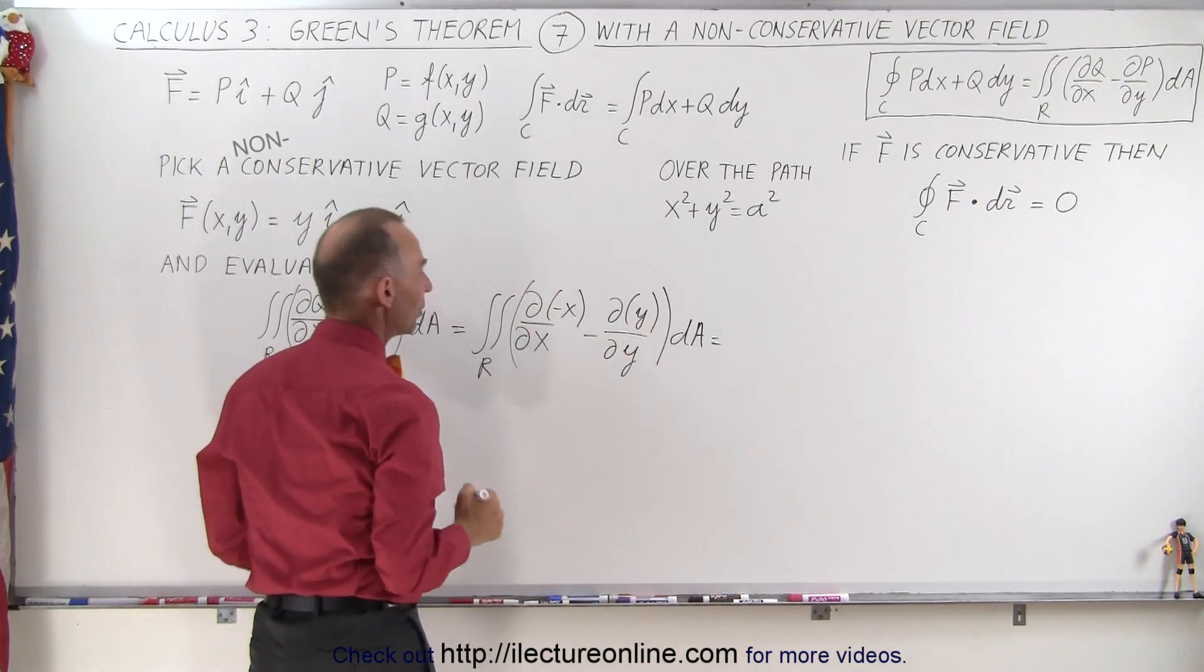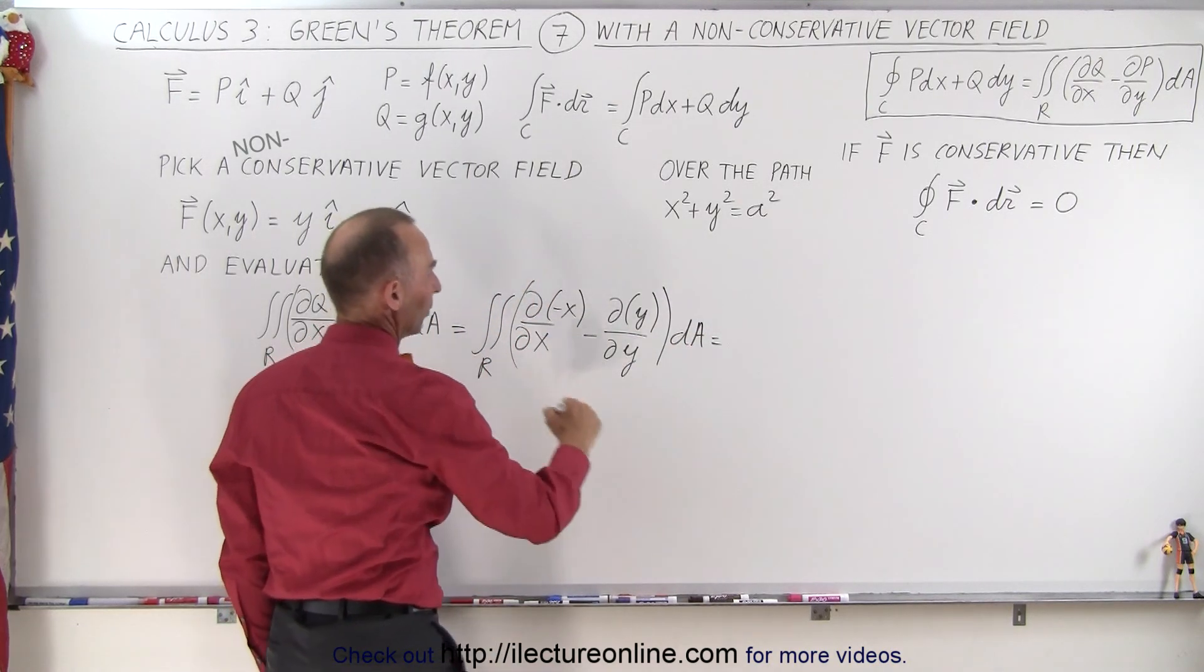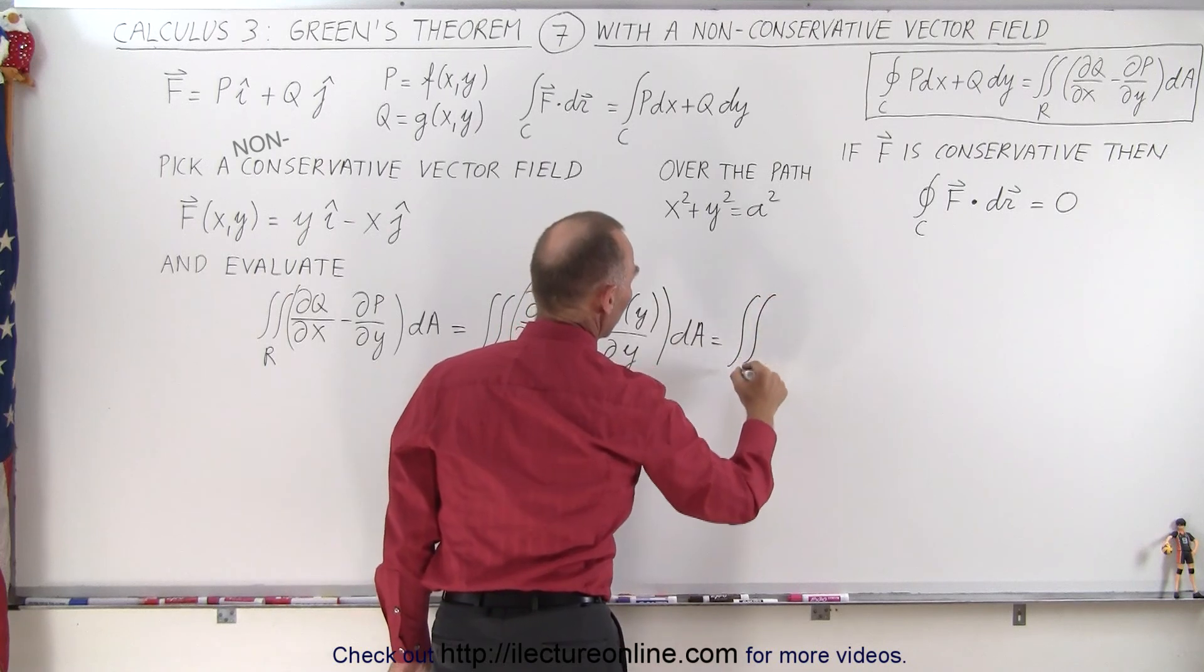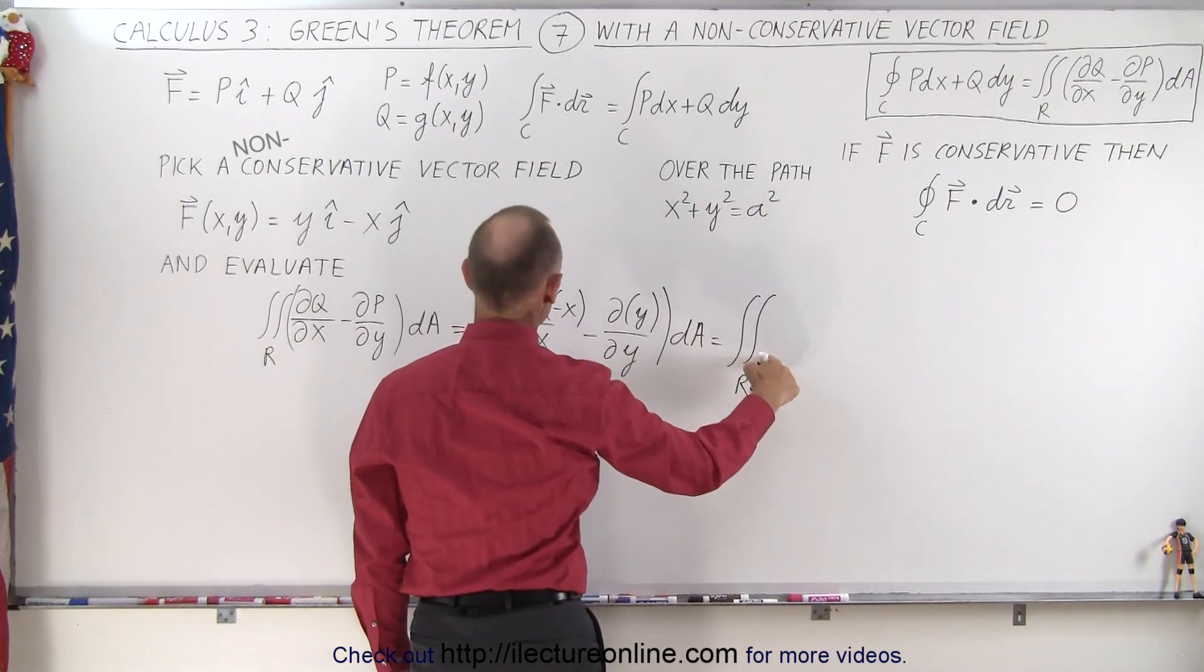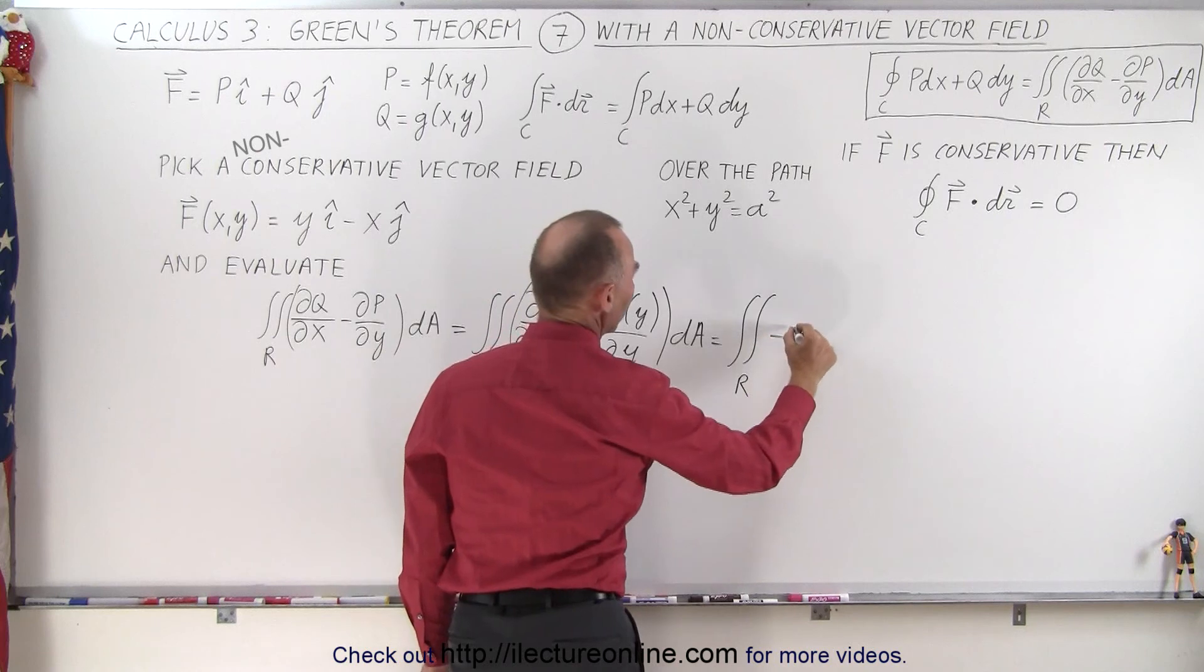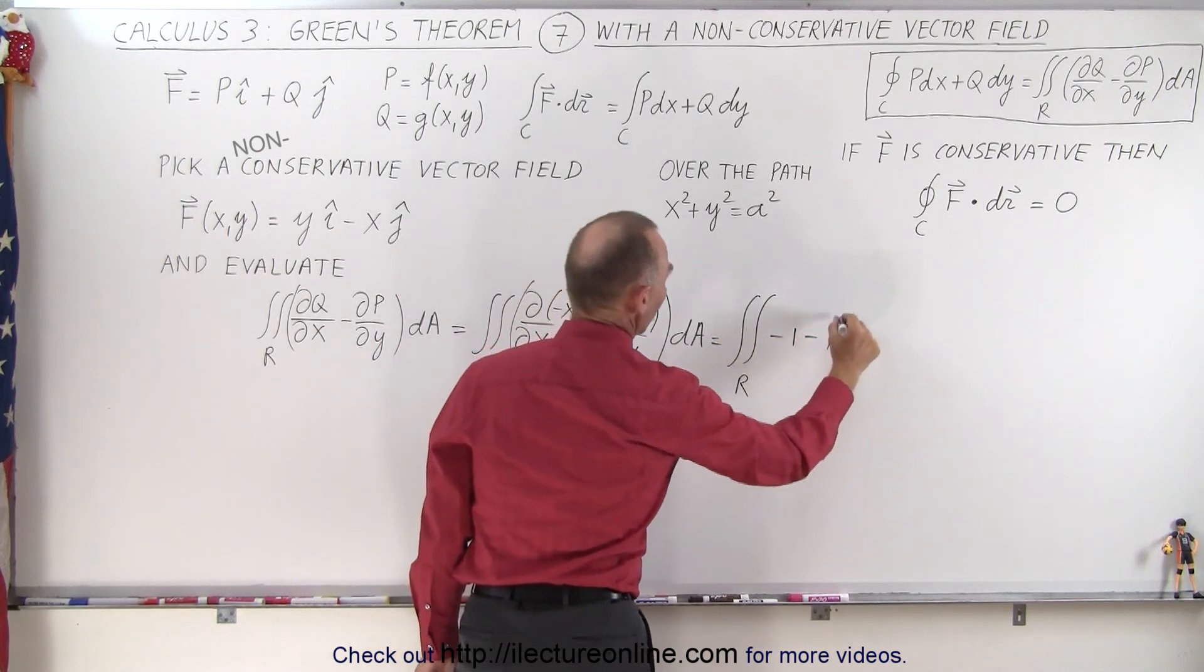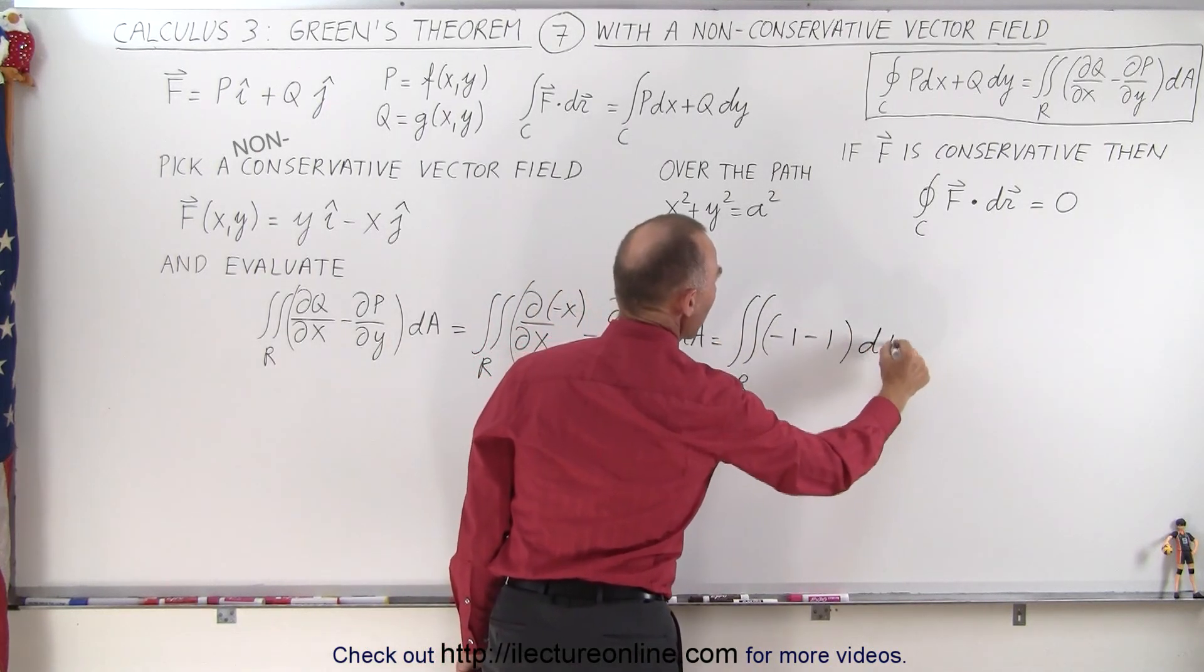This is going to be equal to the double integral over the region enclosed by the path of integration. And this is going to be a minus 1, minus 1 times dA.